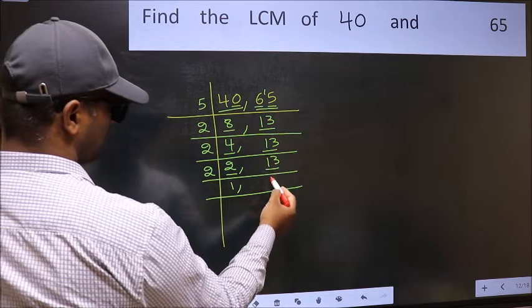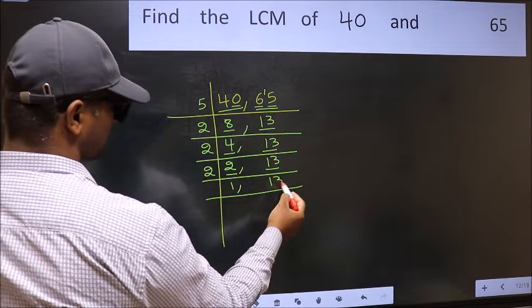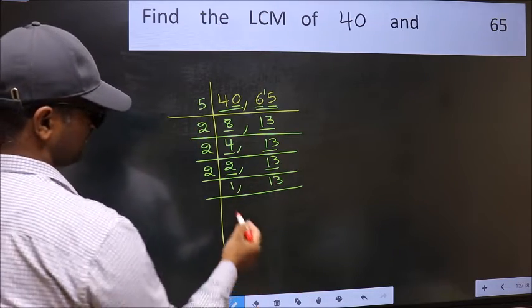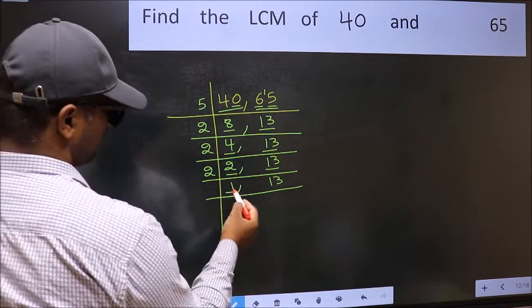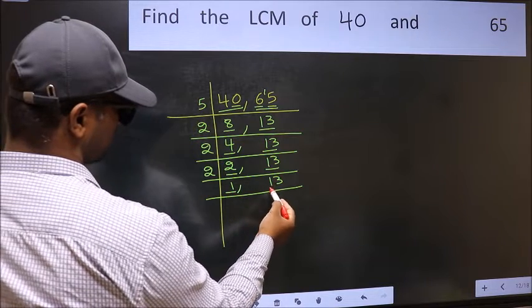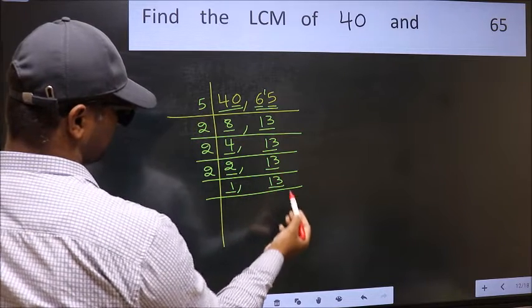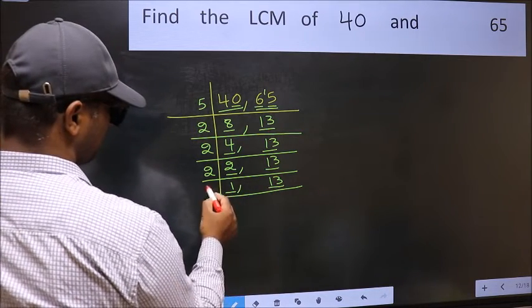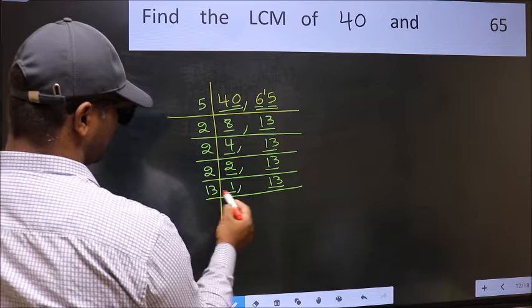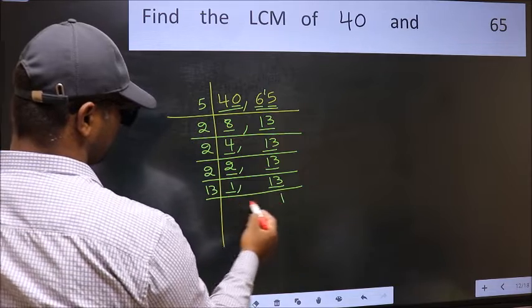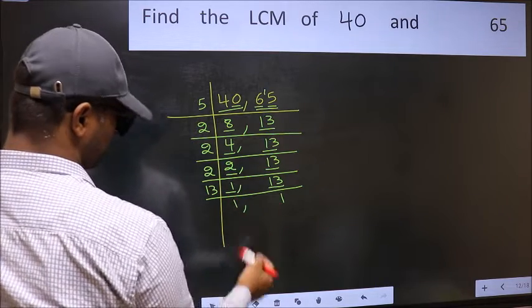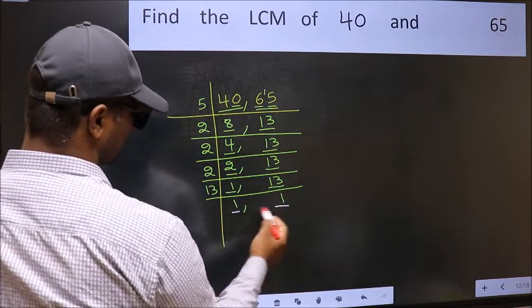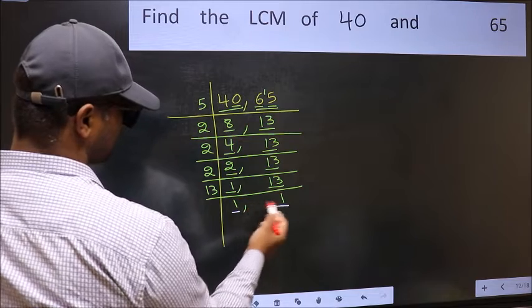Now we got 1 here. So focus on the next number, 13. 13 is a prime number, so 13 times 1 is 13. We got 1 in both places.